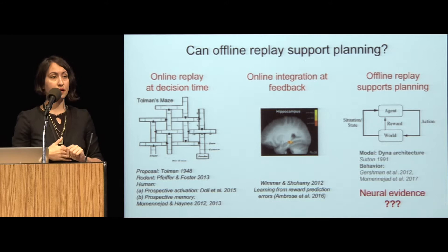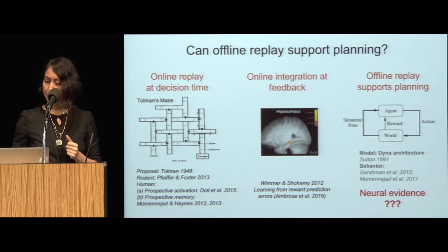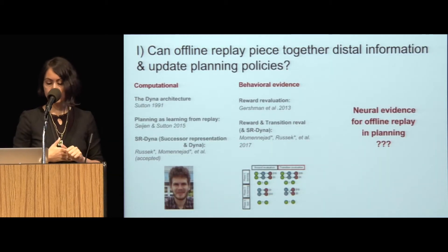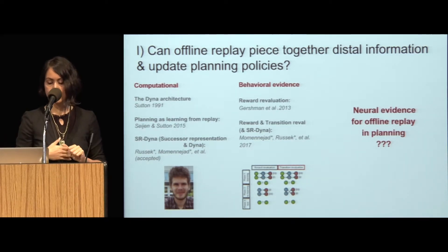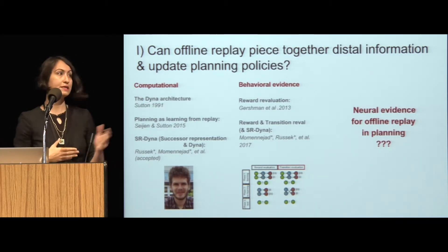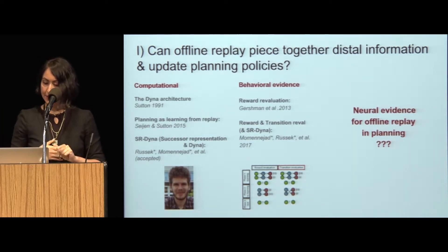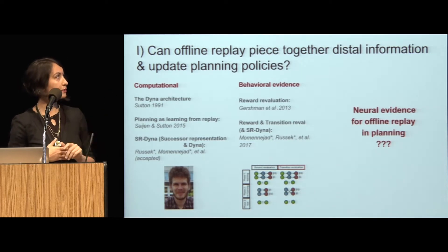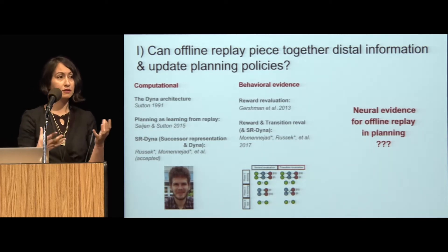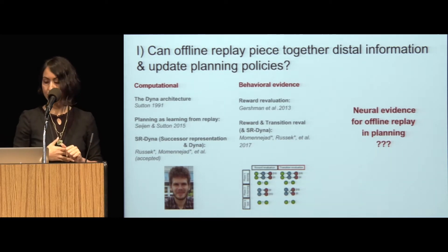Although we have models like the Dyna architecture and behavioral evidence that offline replay might support planning, we don't have neural evidence as of yet that this actually is the case. In the 90s there was a proposal of the Dyna architecture, followed by further work by Sutton and colleagues, to propose that planning — one form of planning at least — could be learning from replay. More recently, we just got a paper accepted. My collaborator Evan Rusak, who must be in the audience somewhere, and also Sam Gershman through some of our collaborations, provide behavioral evidence that this does happen. Now let's see if we can put all of these things together to design a task to figure out whether we find neural evidence for this.